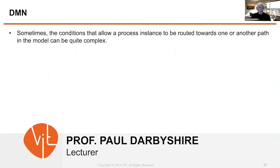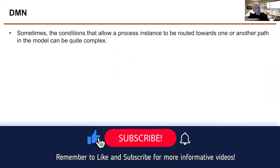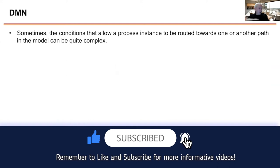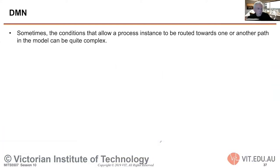Now let's talk about DMN — Decision Model Notation — the other standard utilized by business process modeling systems. Sometimes the conditions that allow a process instance to be routed from one path to another in the model can be quite complex. As we've seen in some business process models, we might have different XOR splits, AND splits, and OR splits, and some of these become quite complex.